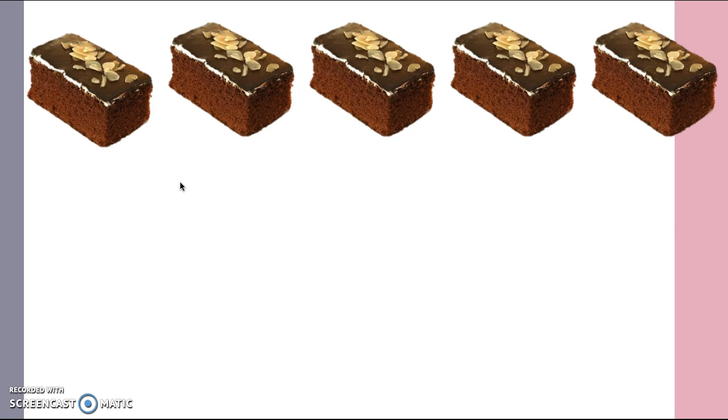I want you to press pause and draw five brownies on your board. But of course, you're not going to do the frosting and the nuts. What are you going to draw? What's a quick way to draw a math drawing? Yes, circles. Good job. So you draw five circles and then press play.